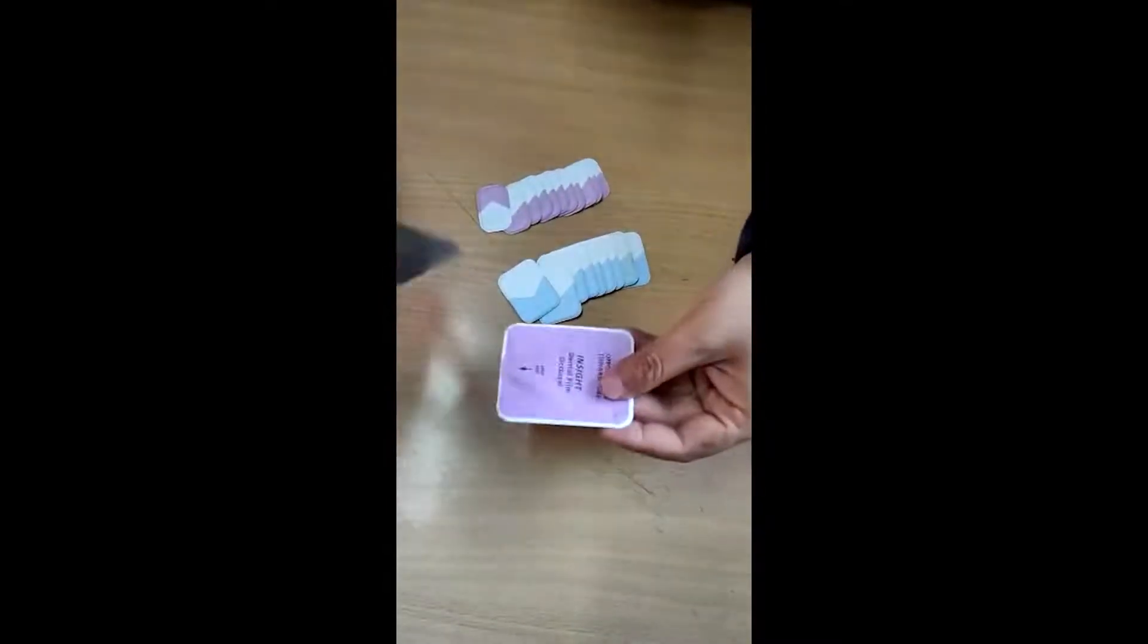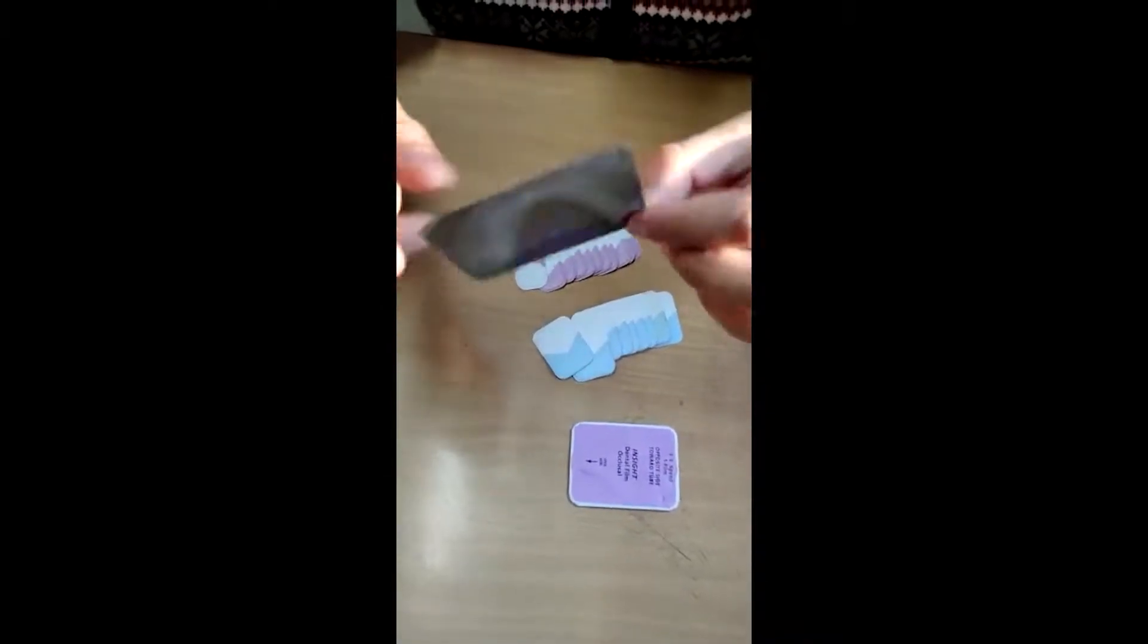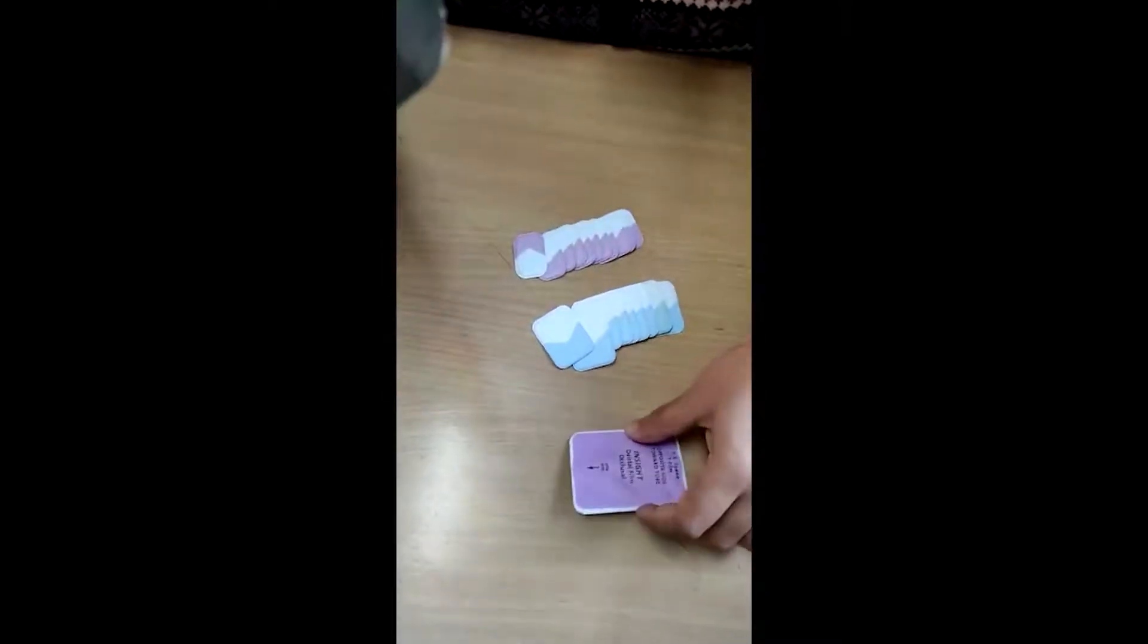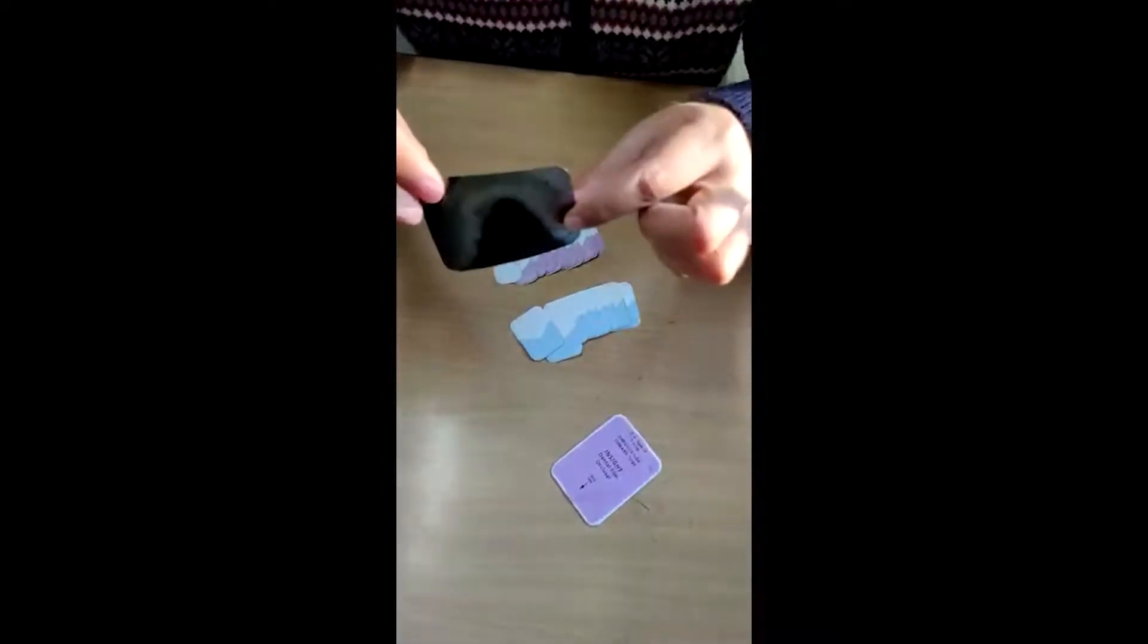The resultant occlusal radiograph, we have already taken the exposure here. I am just showing you the film. This is the mandibular occlusal radiograph. This is the type of film which you will get. The components remain the same: you have black paper, you have lead foil inside it also, and the polythene, the plastic polythene covering which is protecting the film inside.